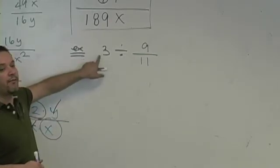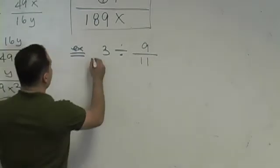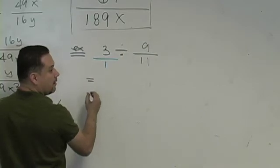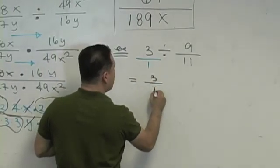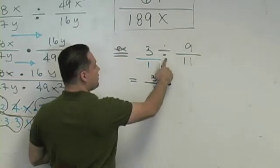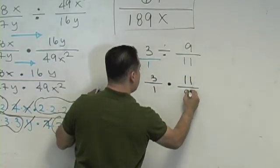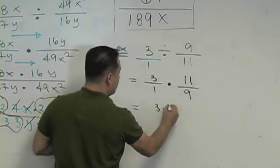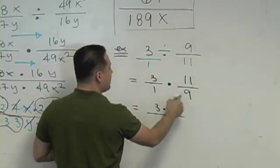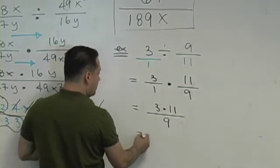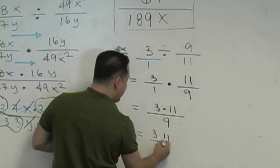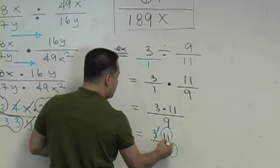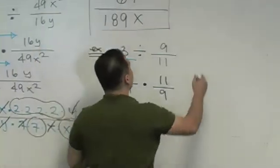What do you do with the 3 if you're going to divide fractions? Put a 1 under it. Now you get 3 over 1 times 11 over 9. Multiply across: 3 times 11 over 1 times 9. Break the 9 down — that's 3 times 3. Can you cancel your 3's? Yes. The answer is 11 over 3.